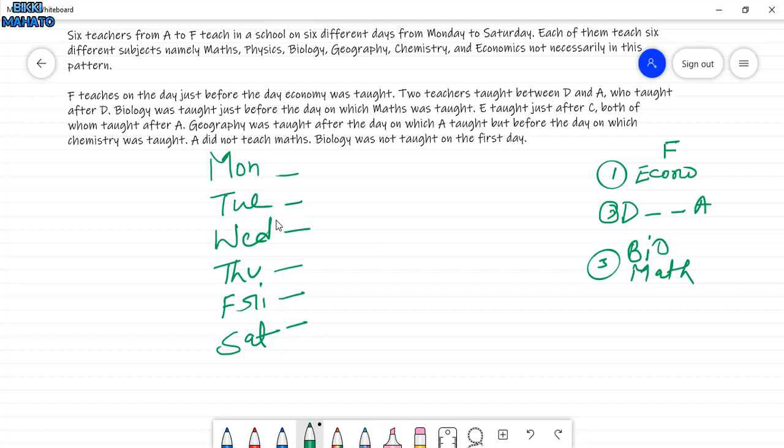E taught just after C, both of whom taught after A. So here is a point clear that between D and A, there is a gap, and after A, E or C will come. So E will come after C, meaning C will be first, then E. This is one pattern clear, that these persons will sit like this. Total six, so we can simply put here E, C, A.